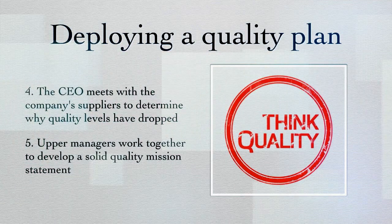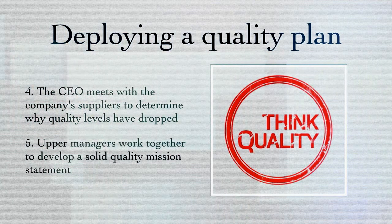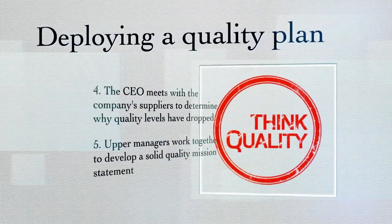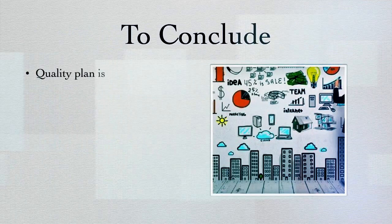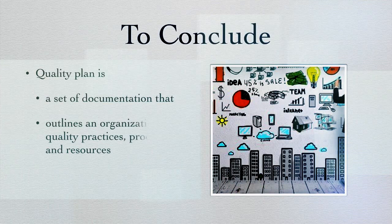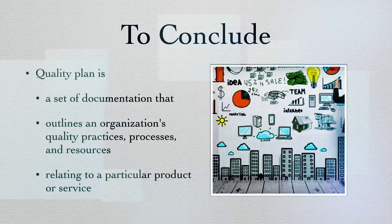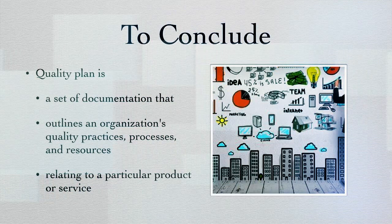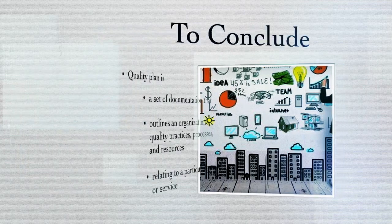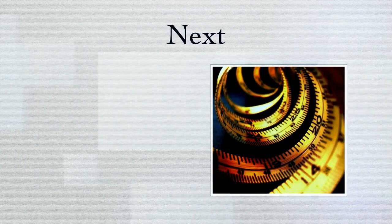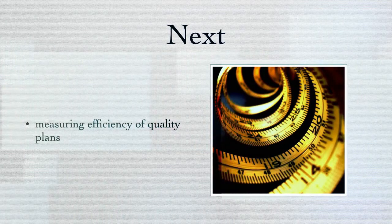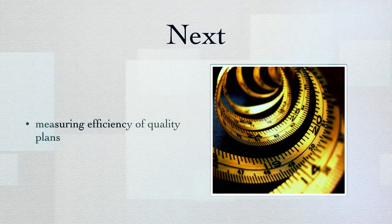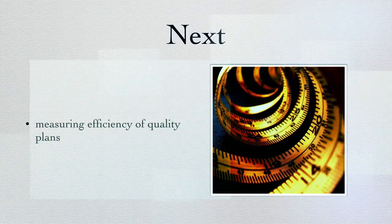A quality mission is developed during quality planning and deployment. To conclude: a quality plan is a set of documentation that outlines an organization's quality practices, processes, and resources relating to a particular product or service. Quality plans can take many different forms depending on what outcomes they are expected to produce, but they all define quality objectives, steps in a process, allocation of resources, and documentation to be applied. Every employee within an organization plays a part in the deployment of a quality plan — upper management, middle management, and operative employees each play a unique and important role in rolling out the quality plan.